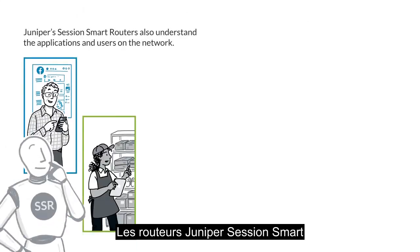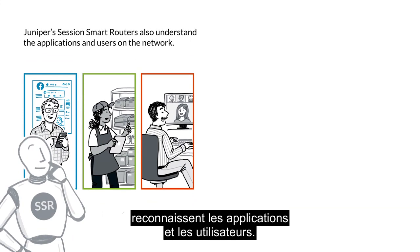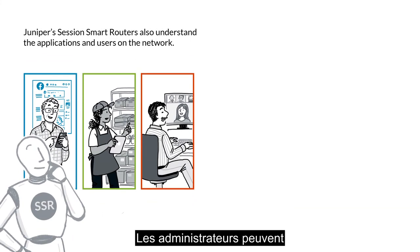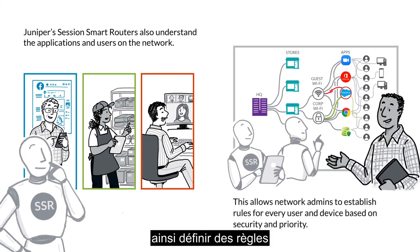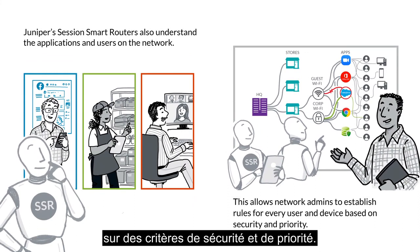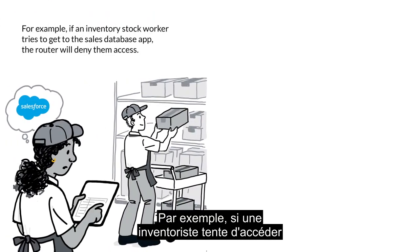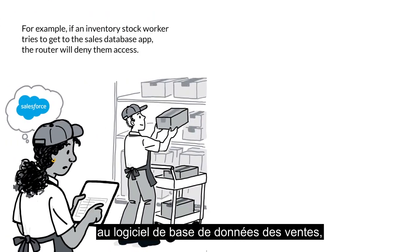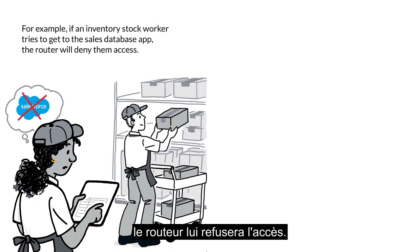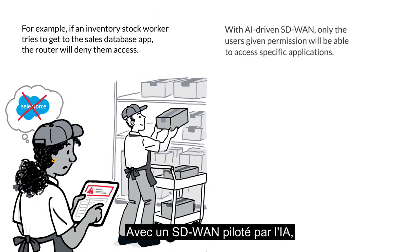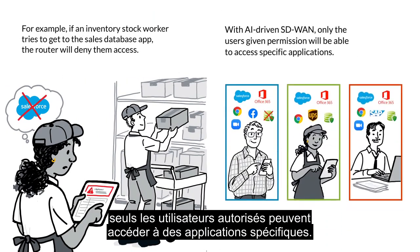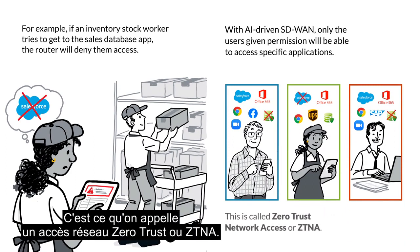Juniper's session smart routers understand the applications and users on the network. This allows network admins to establish rules for every user and device based on security and priority. For example, if an inventory stock worker tries to get to the Sales Database app, the router will deny them access. With AI-Driven SD-WAN, only the users given permission will be able to access specific applications. This is called Zero Trust Network Access, or ZTNA.